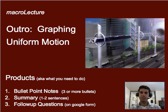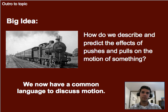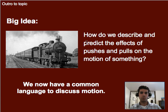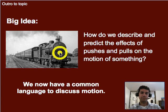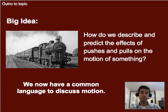Since we started with that old-fashioned train, I figured I'd throw a futuristic train on here. The big idea we've been building toward this entire unit — and probably the next one or two units — is: how do we predict the effect of a push or pull on something? For example, if we make the pull from the train bigger, how does that affect the speed or the change in speed of the train?